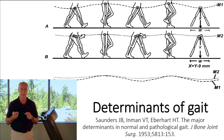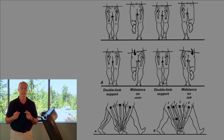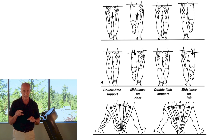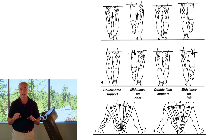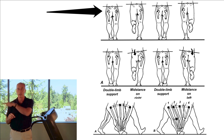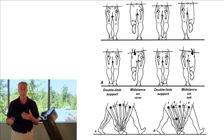Saunders, Inman, and other researchers came up with a series of determinants that improved efficiency during the gait cycle. When the pelvis is held in a perfectly leveled position, glute medius has to work a little too hard, the center of mass goes up and down a little bit more, metabolic cost increases, and you end up with a less efficient gait.